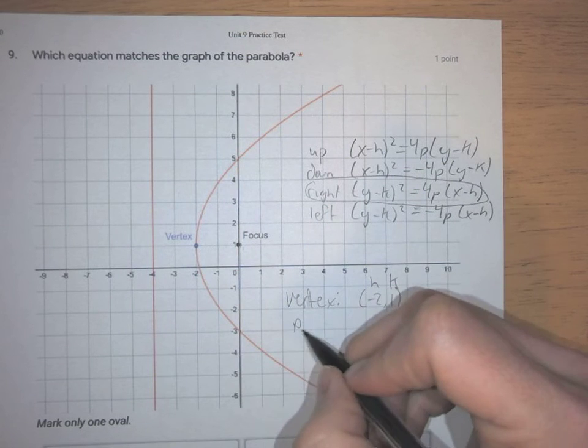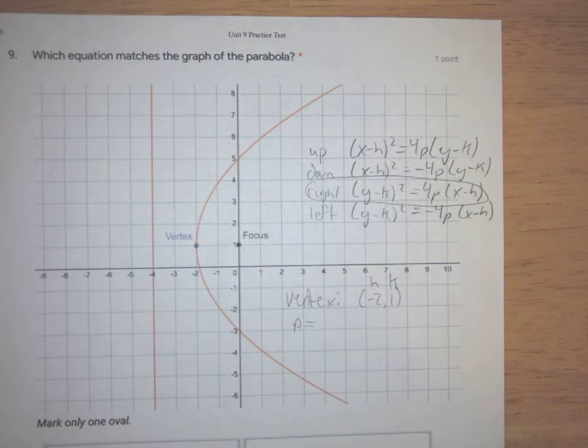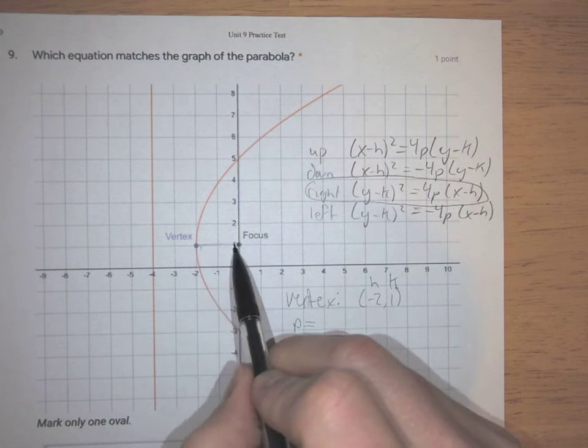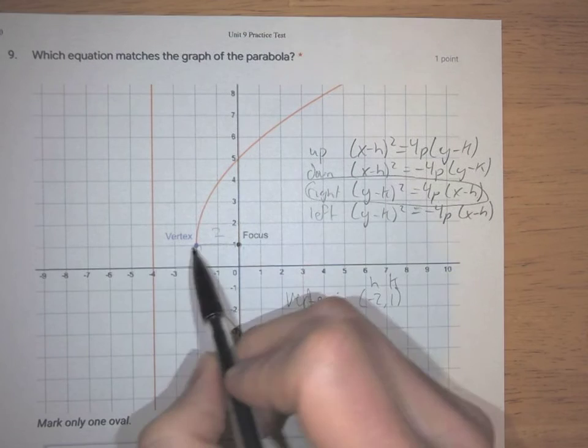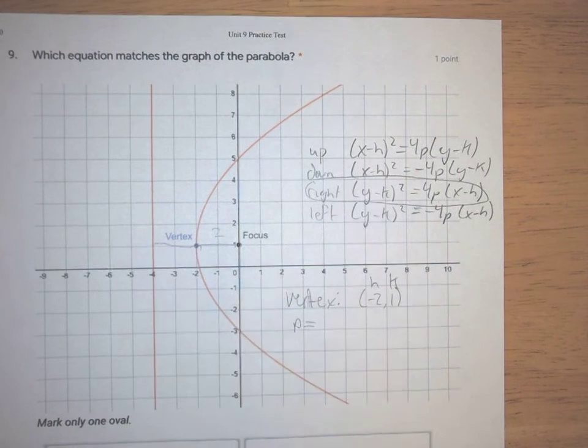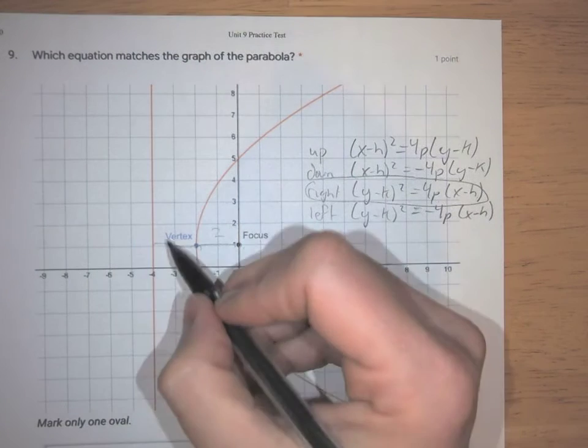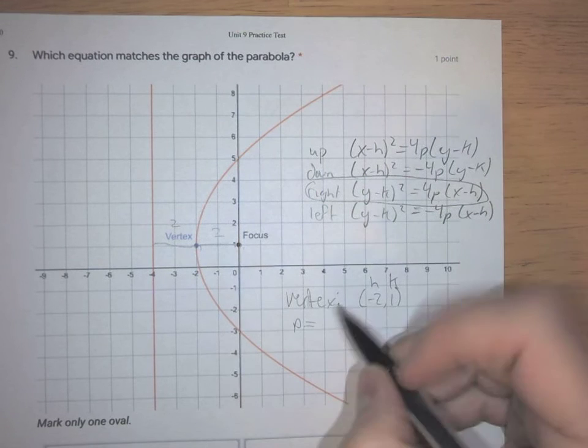Then we also want to find p, which is the distance between the vertex and the focus, which in this case we can see is 2. It's also the distance from the vertex to the directrix, which in this case is still 2. It's 2 either way.